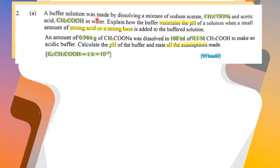A buffer solution was made by dissolving a mixture of sodium acetate and acetic acid in water. Explain how the buffer maintains the pH of a solution when a small amount of strong acid or a strong base is added to the buffer solution.